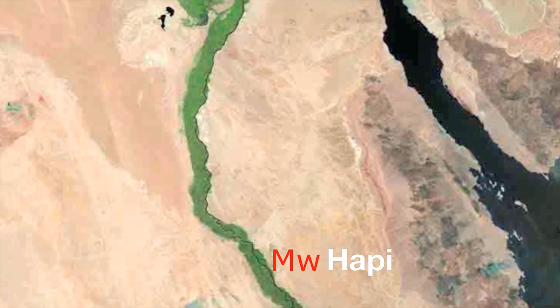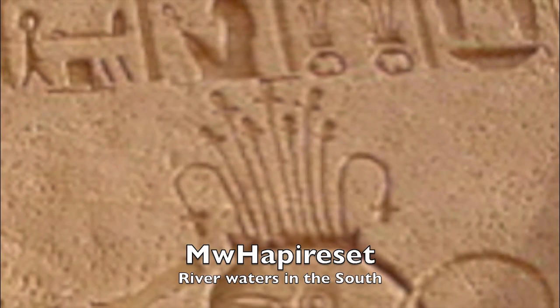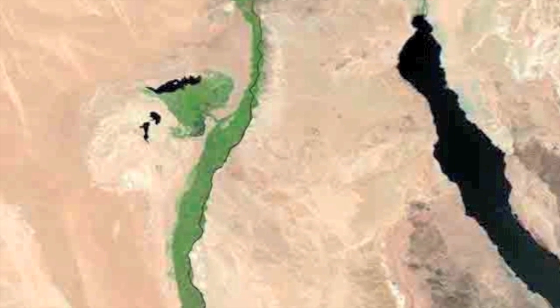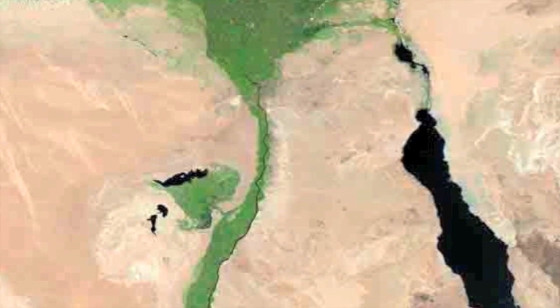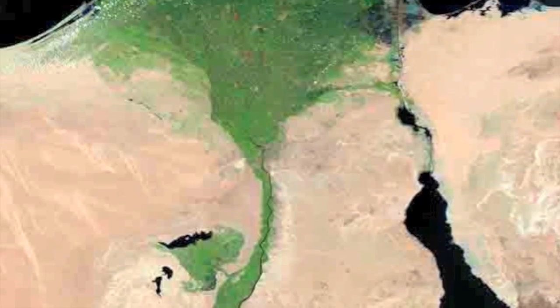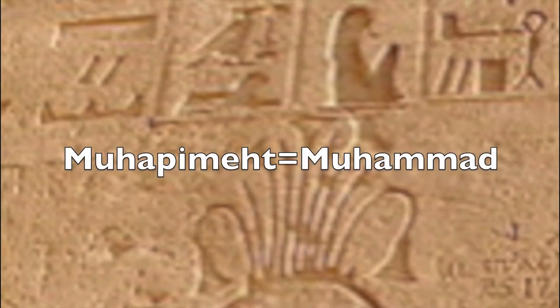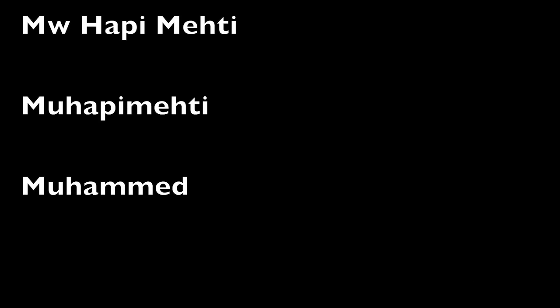But the origin of this deity is in the south, and when there he is called Muhap Reset. When he floats from the upper to the lower, he reaches the most northern parts of Kemet. He is then called Muhap Meheti — the river waters in the north — for the word Meheti means north.